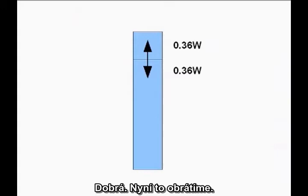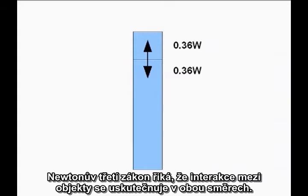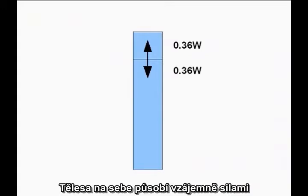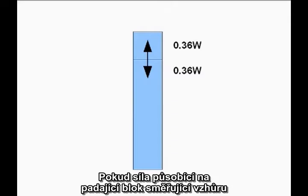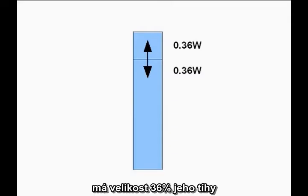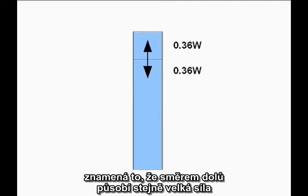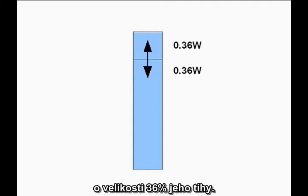But now turn it around. Newton's Third Law says interactions between objects work both ways. The forces two objects exert on each other are always equal and opposite. If the upward force acting on the falling block is 36% of the weight of the falling block, the downward force exerted by the falling block must be exactly the same — 36% of the weight of the falling block.